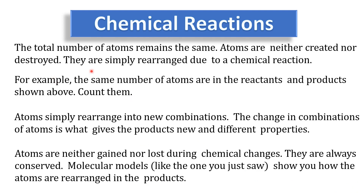In totality, the total number of atoms remains the same in any reaction. Atoms are neither created nor destroyed — they are simply rearranged due to a chemical reaction. The same number of atoms are in the reactants and products. You can go back and count the number of carbon, hydrogen, and oxygen atoms in the vinegar and baking soda reaction. Atoms simply rearrange into new combinations; the change in combination is what gives products new and different properties. Atoms are neither gained nor lost during chemical changes — they are always conserved. Molecular models show you how atoms are rearranged in products.